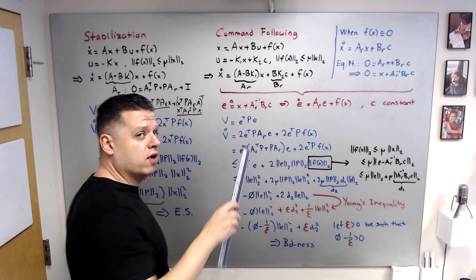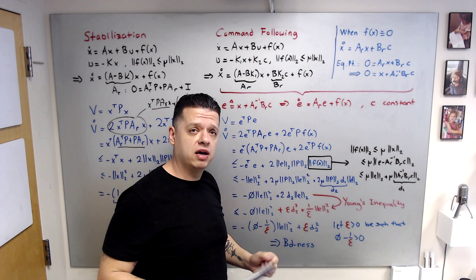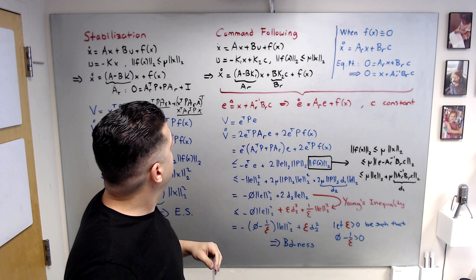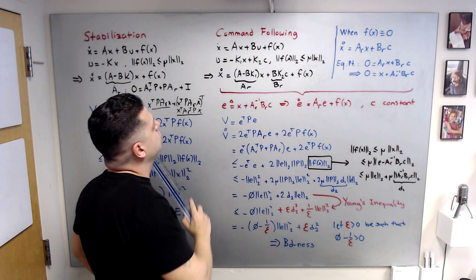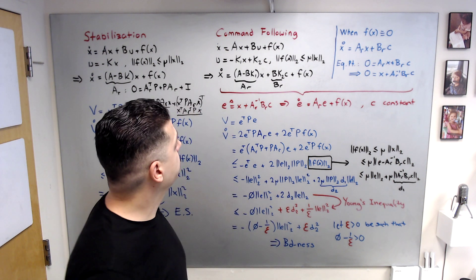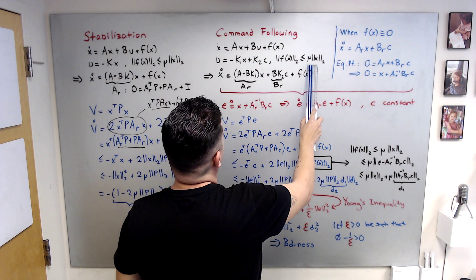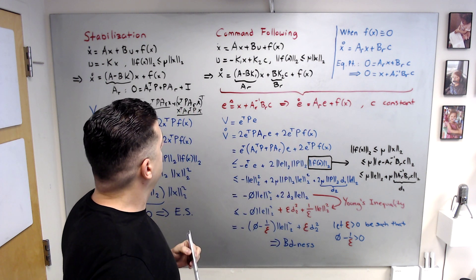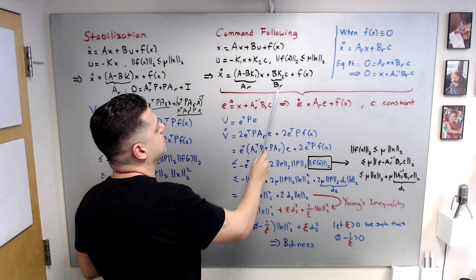I am assuming x is available for feedback — this is not an output feedback problem. I am using a feedback plus feedforward controller for command following; an integral approach or another approach could also be used. The same linear growth inequality assumption on the uncertainty applies. Closing the loop gives x-dot = A_R x + B_R c + f(x), where c is a constant command.